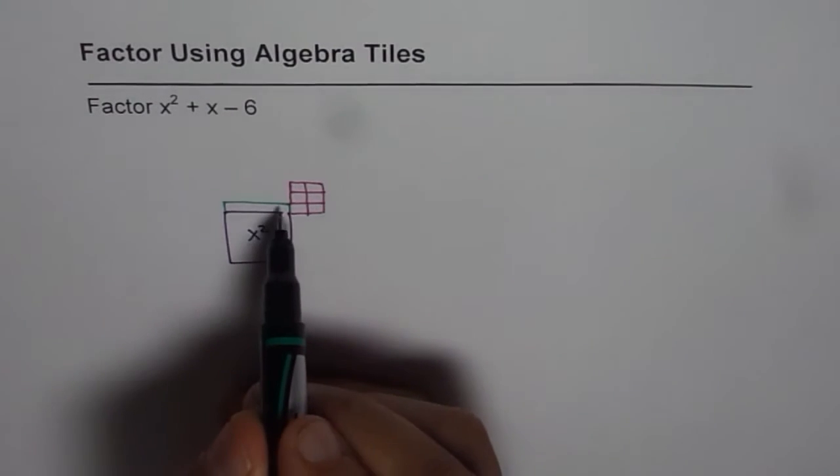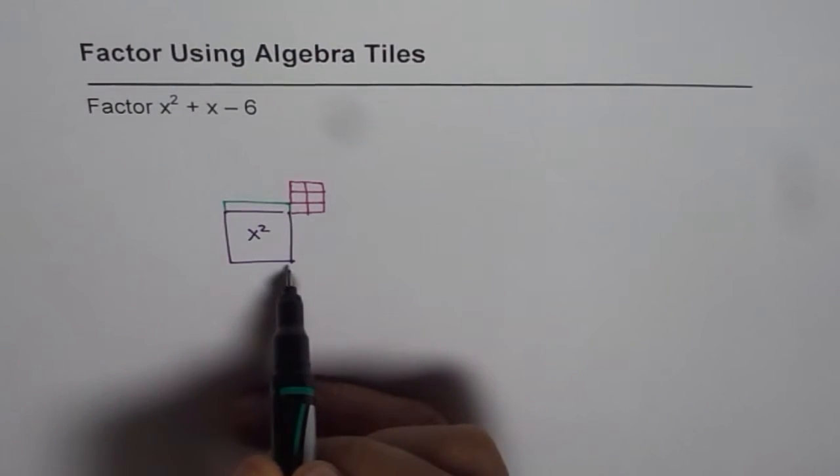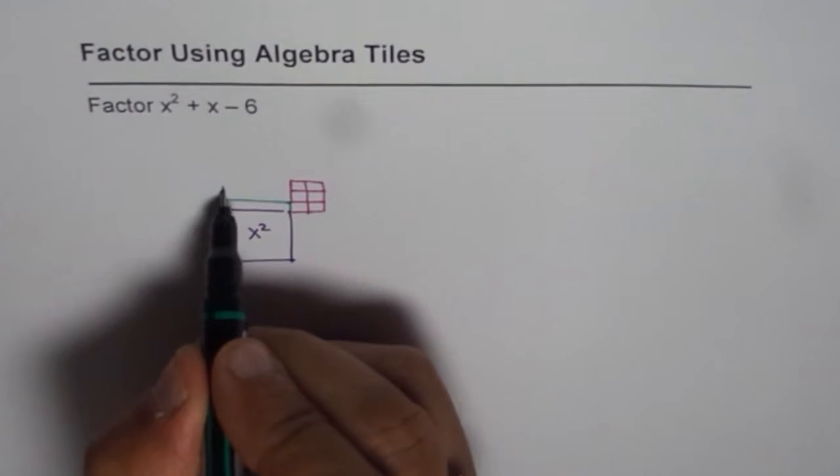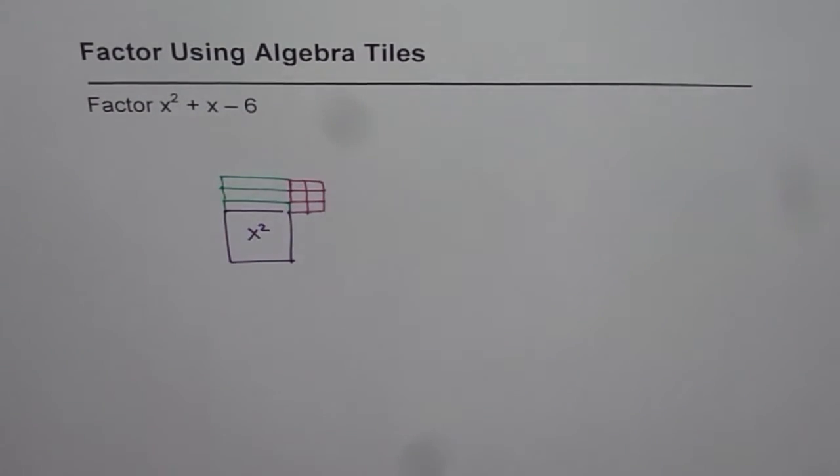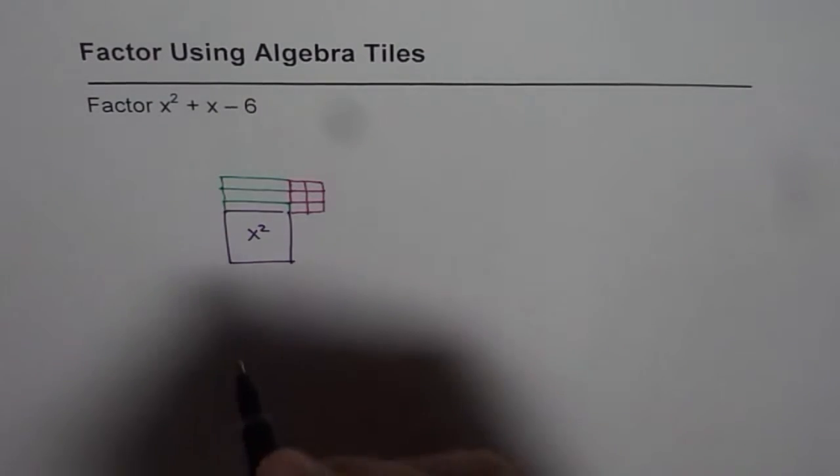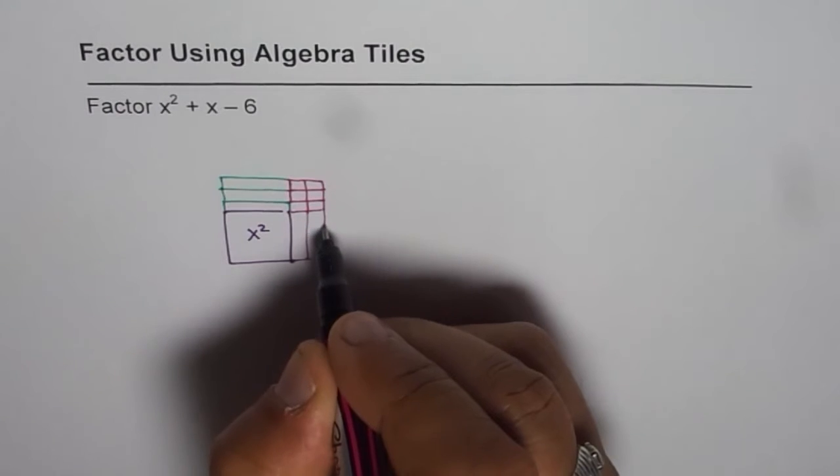Now how can we do it? We can do it by adding 2 x tiles and subtracting 2 x tiles. So if I add 2 x tiles here, these are the added 2 x tiles, and by subtracting 2, that means minus x tiles, which are these 2. We can complete the rectangle.